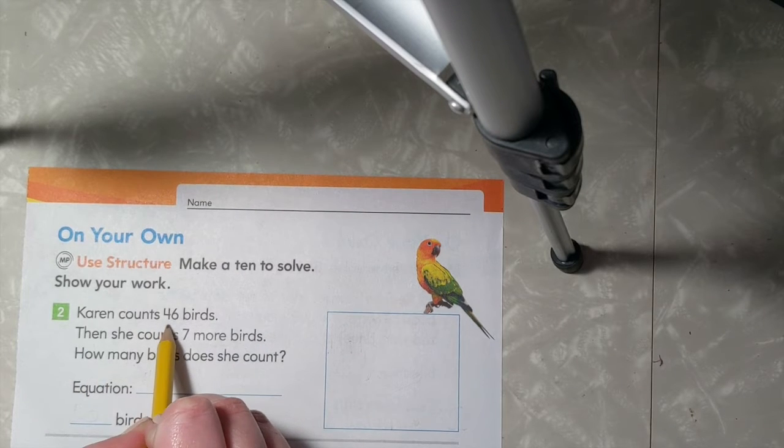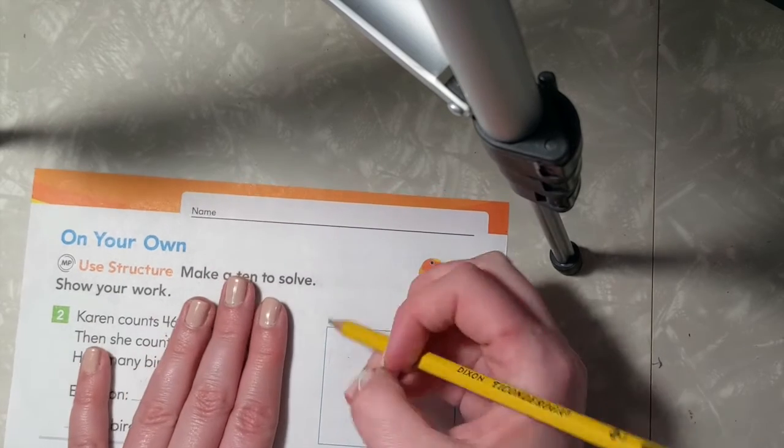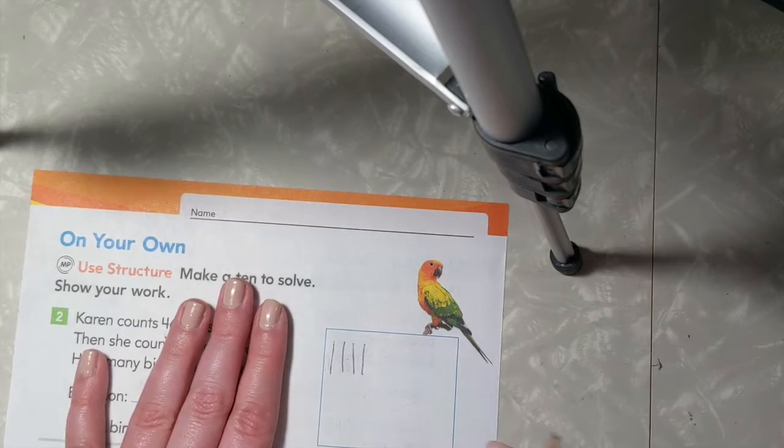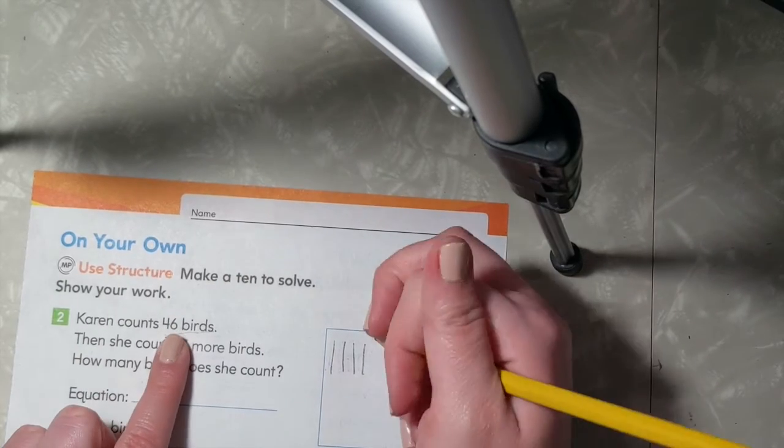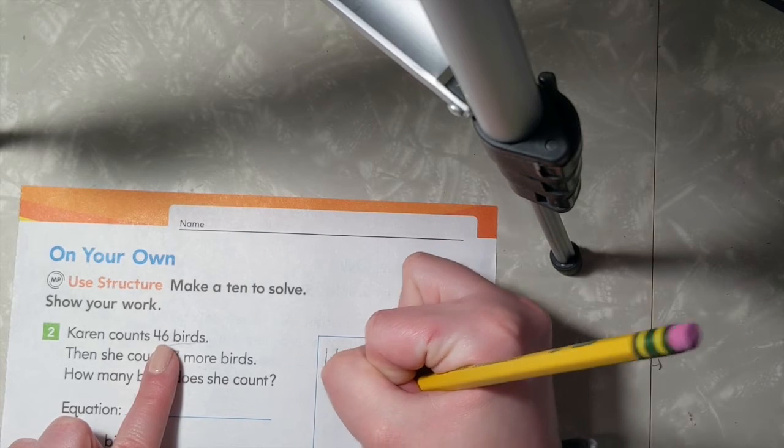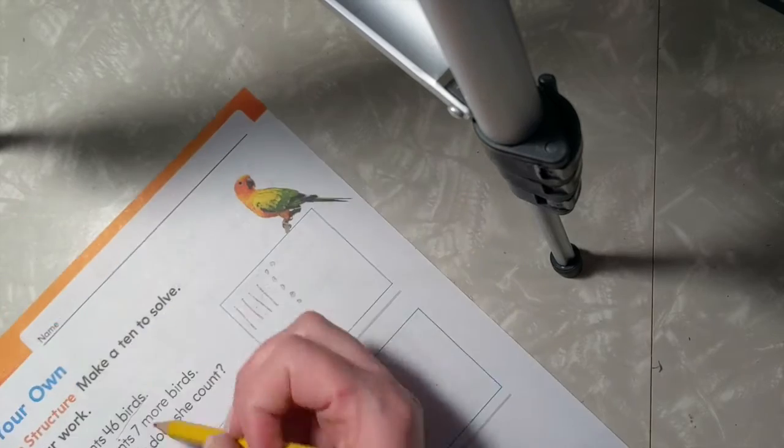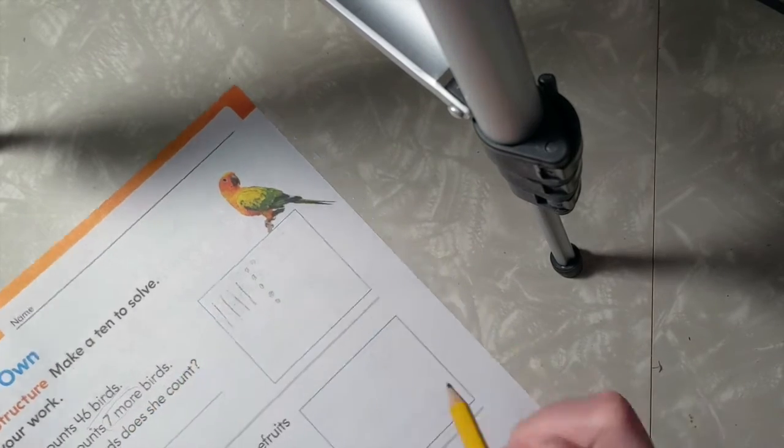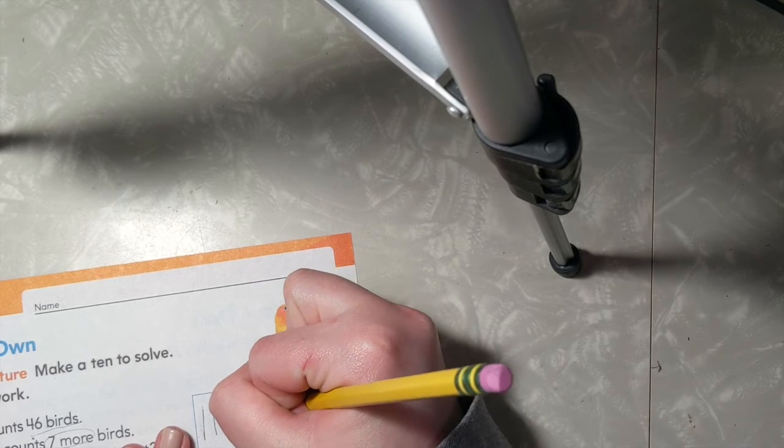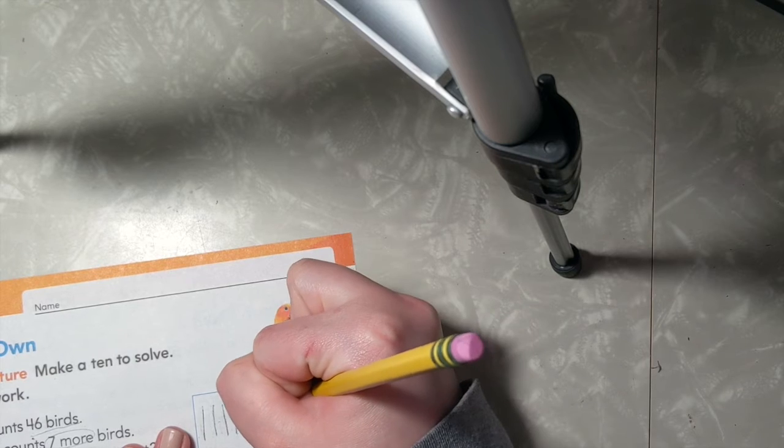Let's go ahead and start with our 46. I will draw 4 groups of 10: 1, 2, 3, 4, and 6 ones: 1, 2, 3, 4, 5, 6. She counts 7 more birds, so I'm going to add 7 more ones: 1, 2, 3, 4, 5, 6, 7.